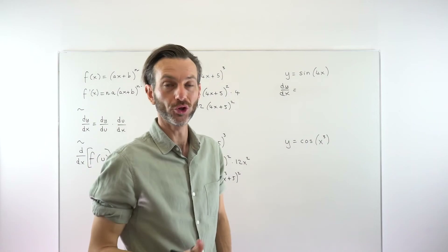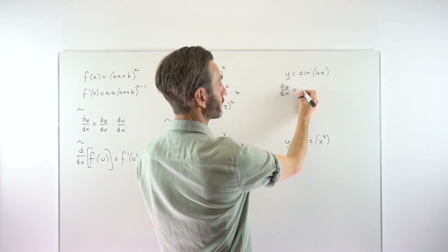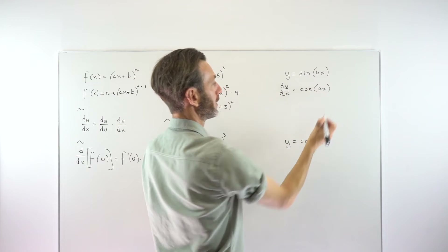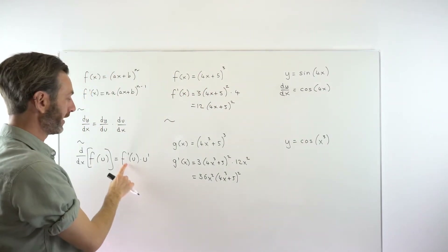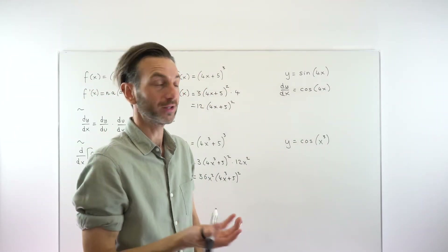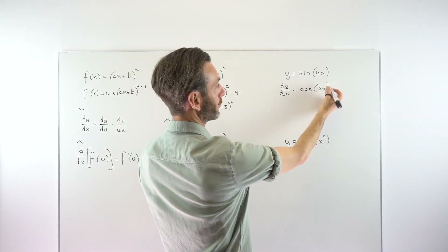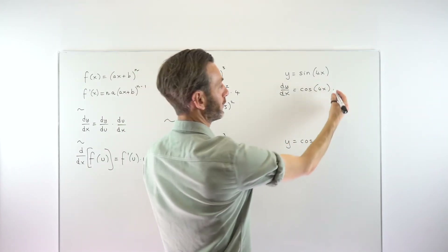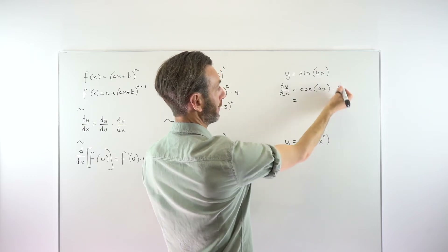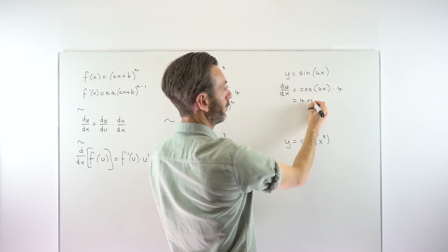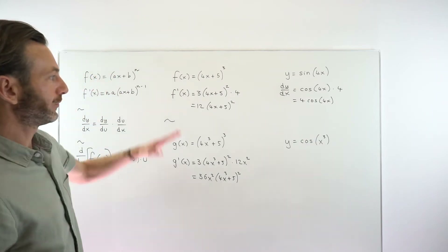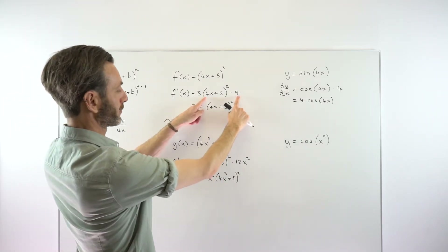Sine differentiates to cosine — that's something you'll need to learn. At that point we've done our f dash u part. Now we multiply by the u dash part — the derivative of 4x is just 4. Tidying up, the 4 comes to the front, so that becomes 4cos(4x). Just following the same pattern — derivative times derivative.